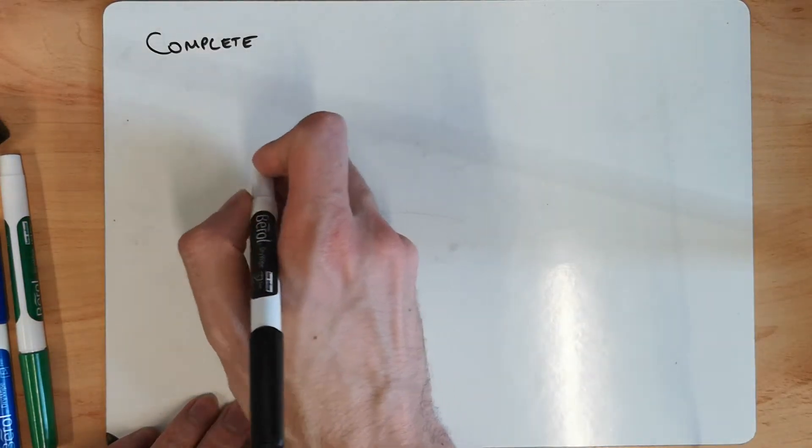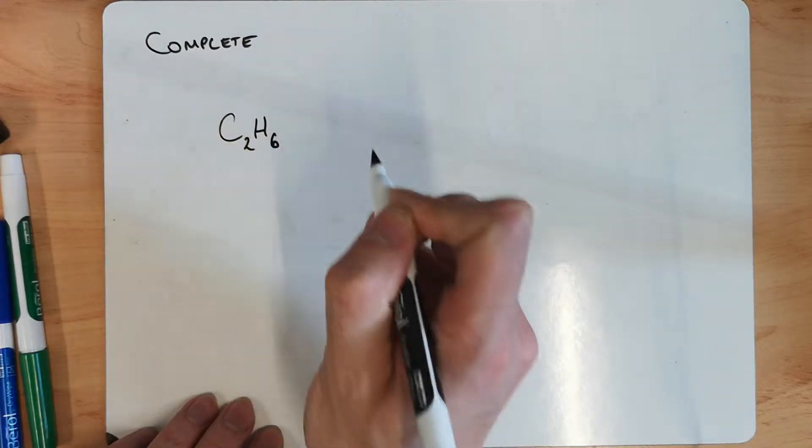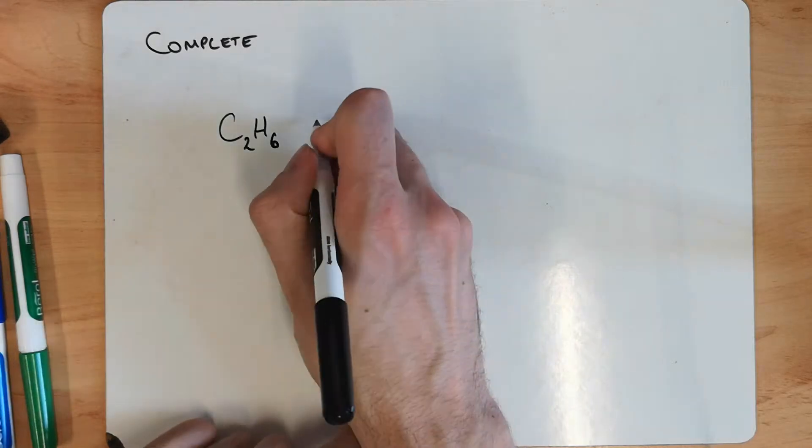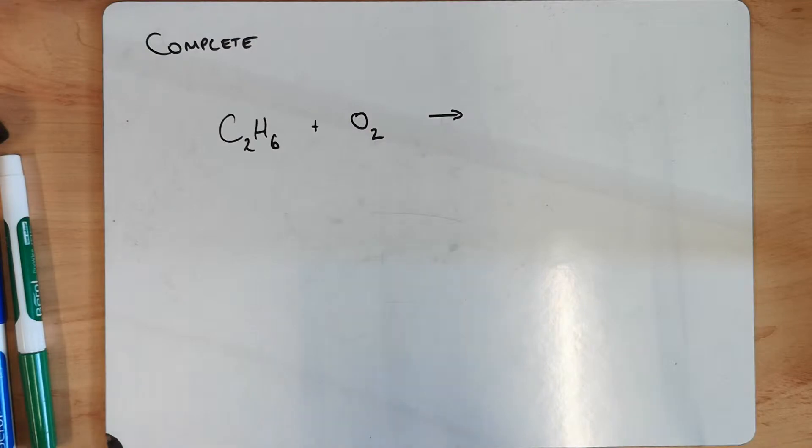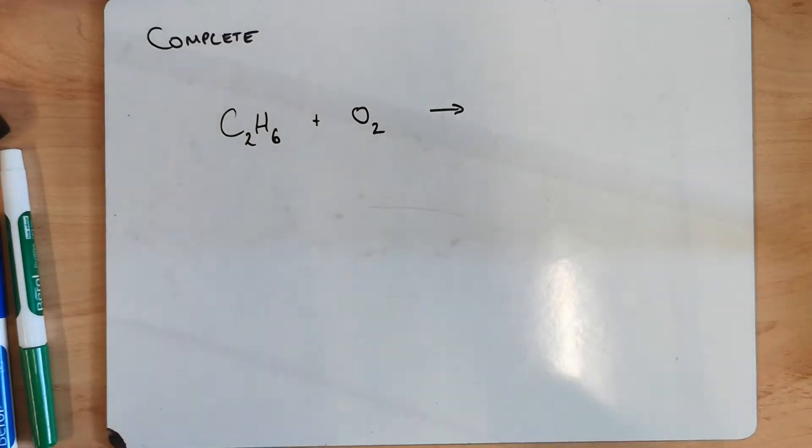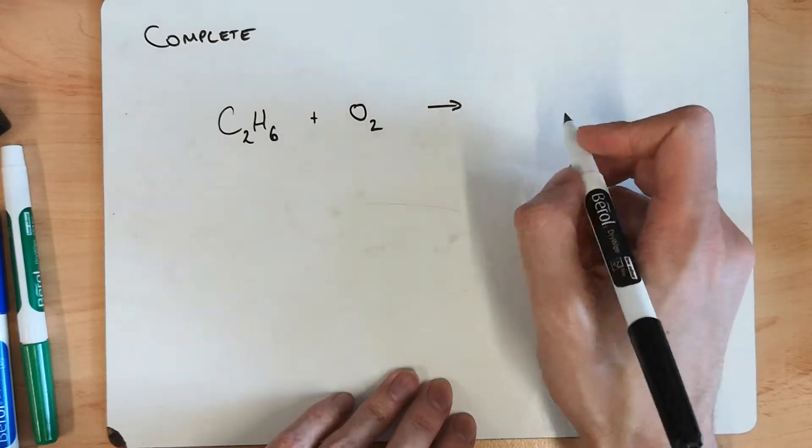If we look at complete, I'm just going to take any hydrocarbon. So I'm going to take ethane, C2H6 and that reacts with oxygen because that's combustion. It's just it reacting with oxygen. We see it catching fire, giving off lots of energy.